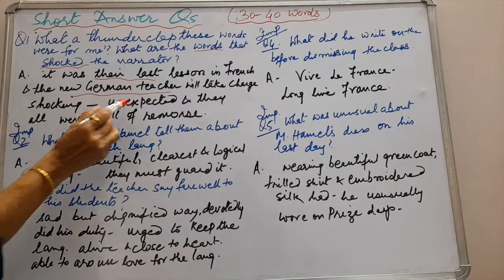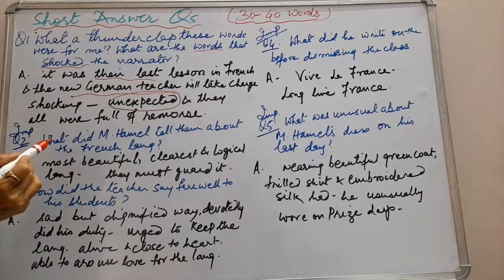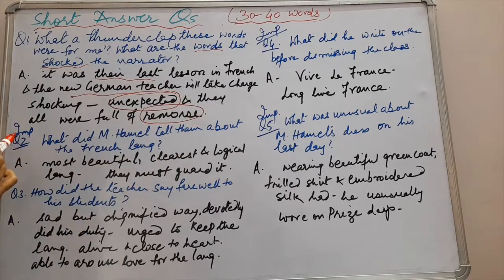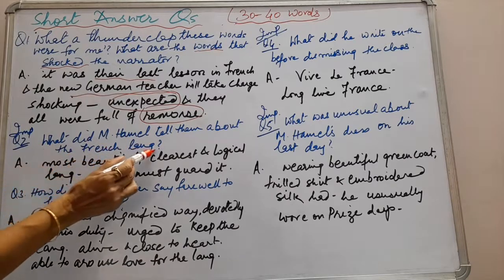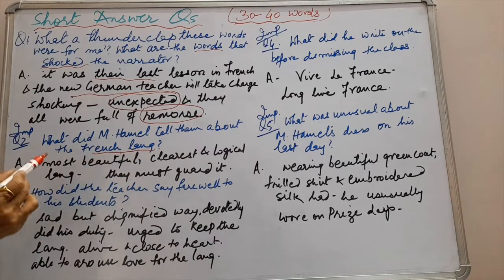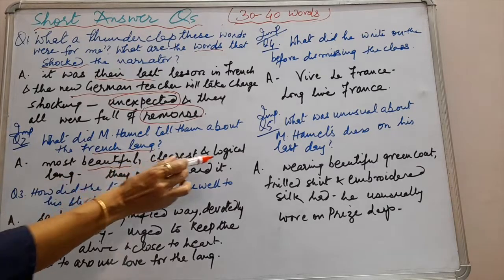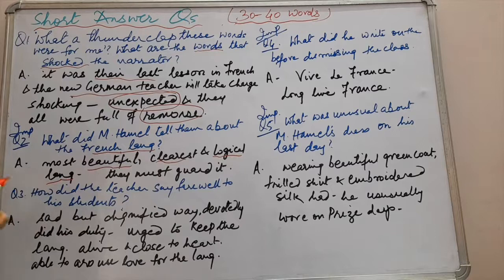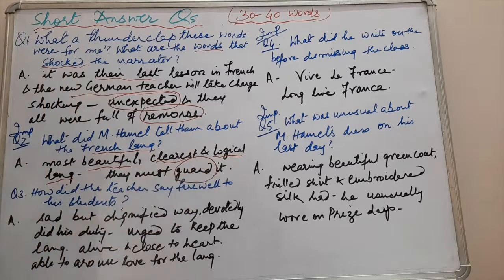These words were shocking because it was an unexpected news for them, and they all were full of remorse. Question number two: What did M. Hamel tell them about the French language? He told them that it was the most beautiful, clearest, and logical language of the world and that they must guard it. You must mention that they must guard it.